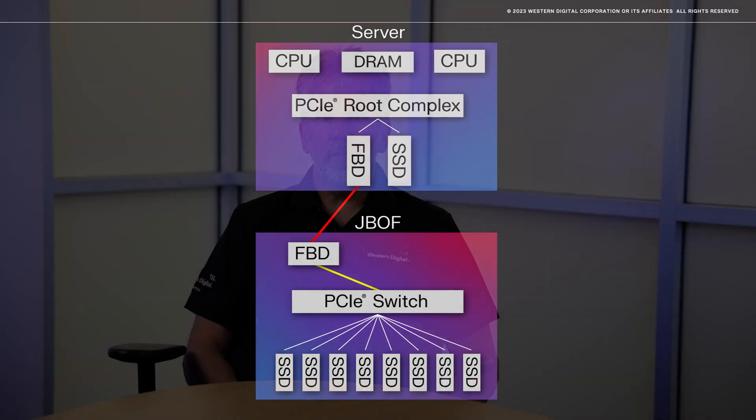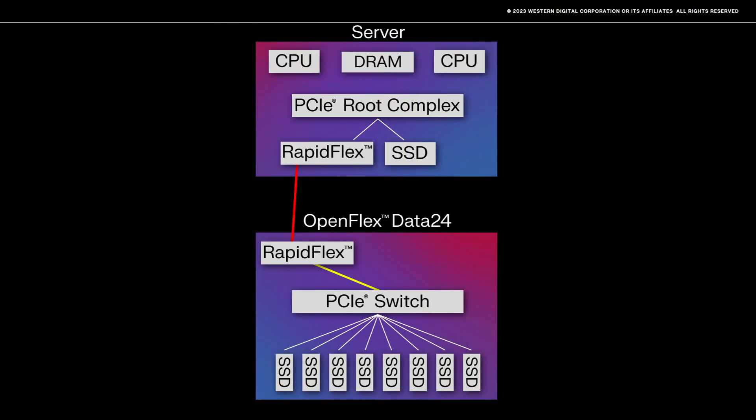Now let's look at a specific implementation where the fabric bridge devices are Western Digital's RapidFlex C2000 and the JBOF is a Western Digital OpenFlex Data24. In the OpenFlex Data24, the C2000 is a target mode fabric bridge device. It provides the PCIe root complex for the attached NVMe SSDs and translates Ethernet traffic to and from the server to PCIe for the SSDs.